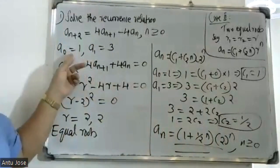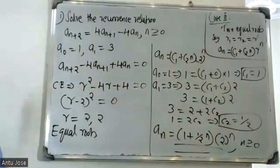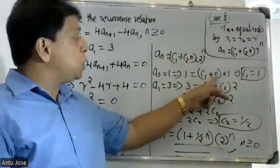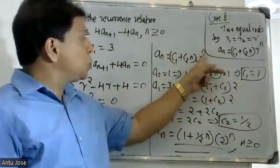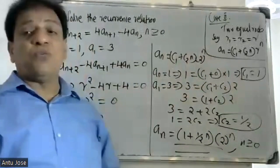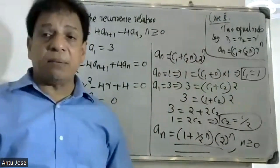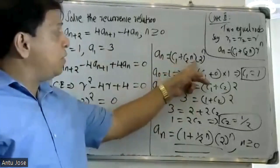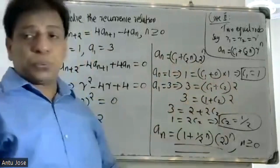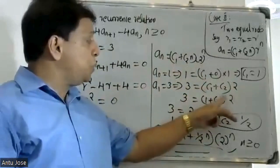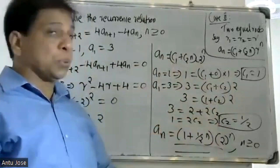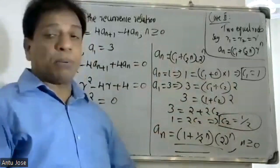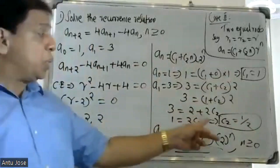Applying the boundary conditions: a(0) = 1 gives C1 = 1. For a(1) = 3, substituting gives 3 = 1 + 2·C2, so 1 = 2·C2, therefore C2 = 1/2. And C1 = 1, C2 = 1/2.